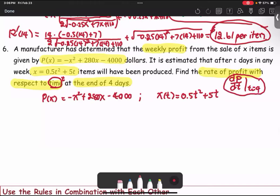At the beginning, P is given in terms of X, and X in terms of T. We see the connection: T is the independent variable for X, and X is the independent variable for P. When you find the derivative, you find the derivative of profit with respect to X times the derivative of X with respect to T.